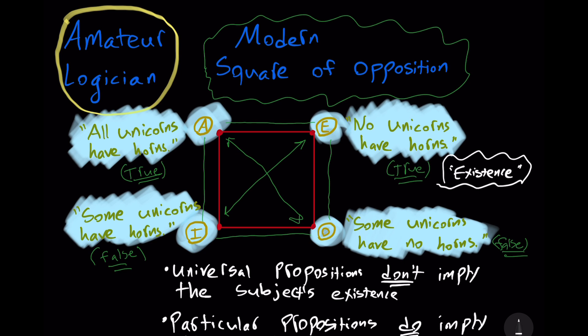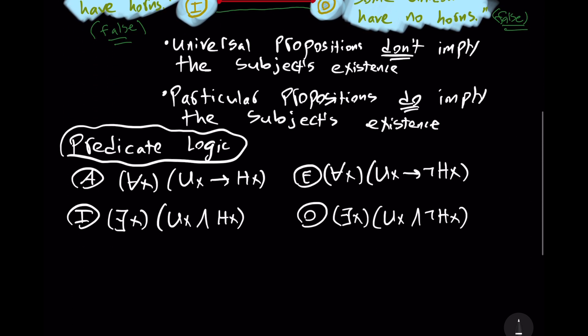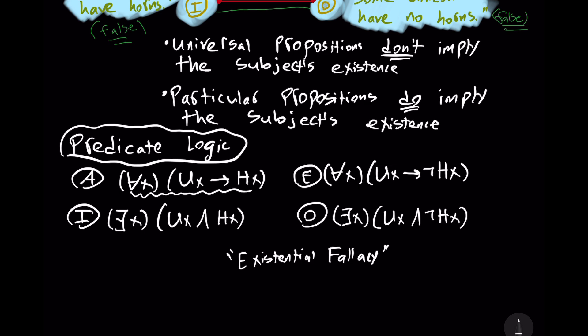But regardless, in Aristotelian scholastic logic, with the traditional square of opposition, we don't treat universal propositions as hypothetical. If we have something like 'all men are mortal,' that implies that 'some men are mortal.' But in modern logic, it would be claimed that we have a so-called existential fallacy — we cannot infer the I proposition from the A proposition. But it's not fallacious on the Aristotelian scholastic account, since it doesn't treat or define the A or E type of propositions as hypothetical.